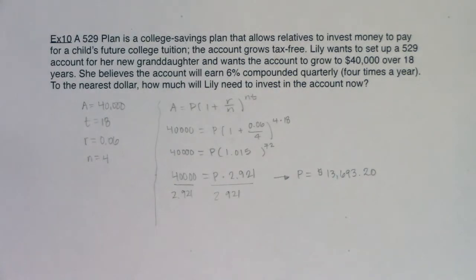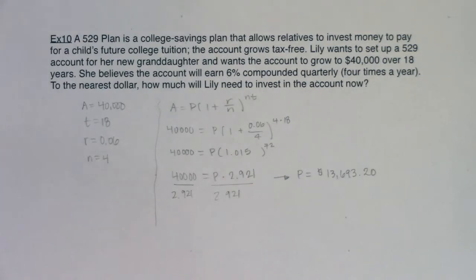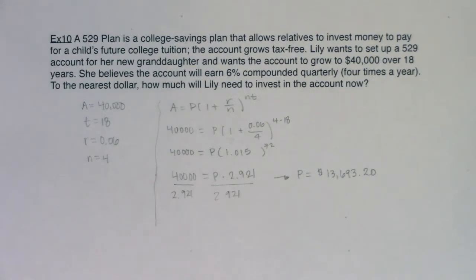We've got a couple of examples now with compound interest compounded at certain times per year. We're going to move over to continuously compounded interest on the next page, and we're going to introduce the number E. I'll see you in a bit. Bye.